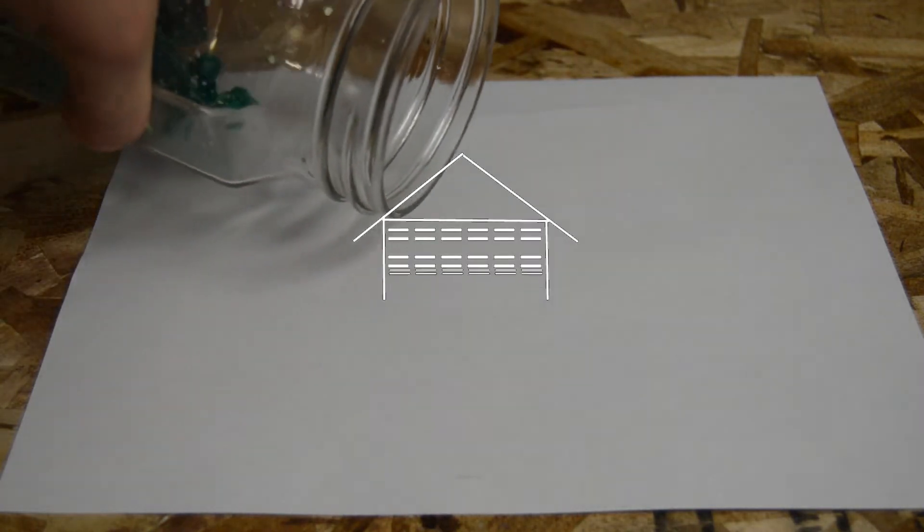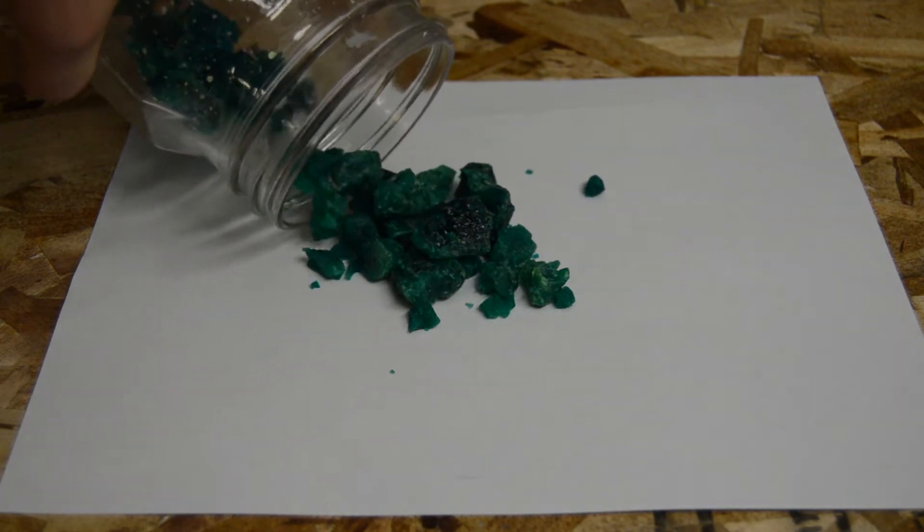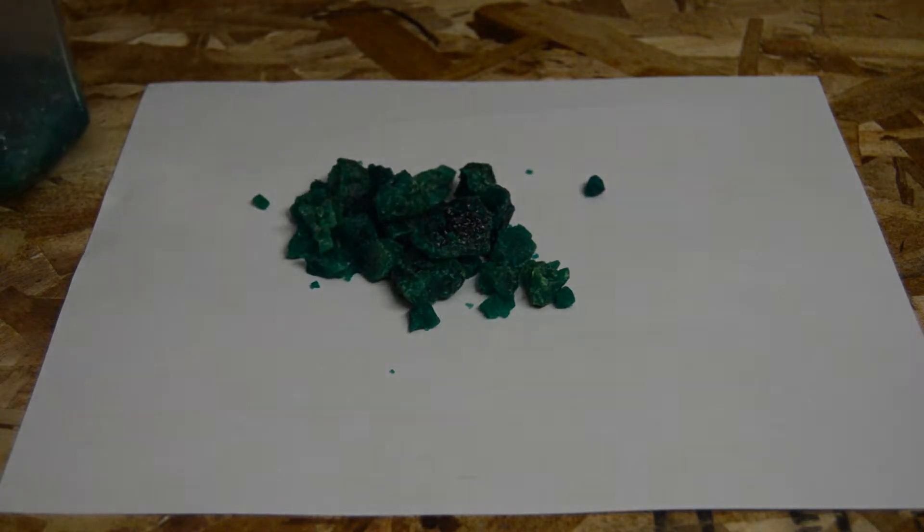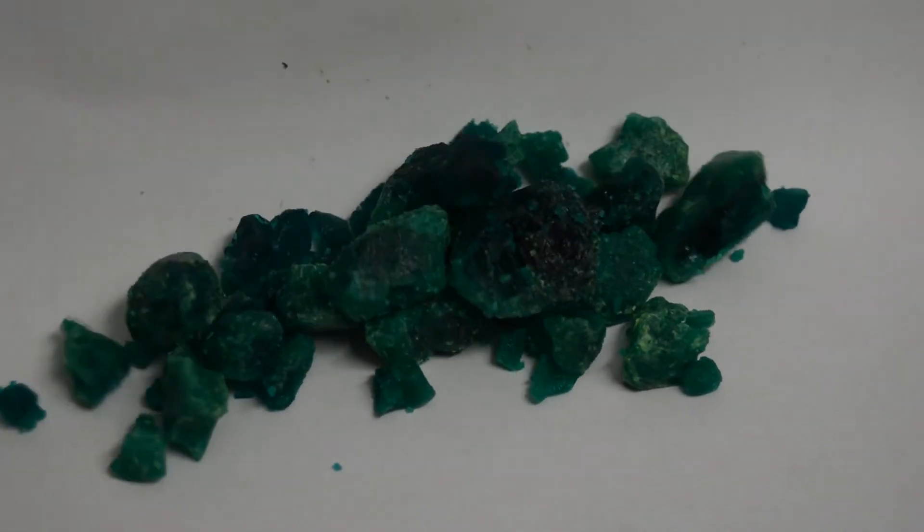Welcome back to Garage Science. In this video I'll be showing you how to easily and safely make nickel sulfate crystal from nickel metal. This nickel sulfate can then be used in various experiments to include nickel electroplating.